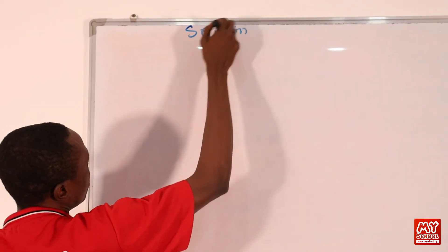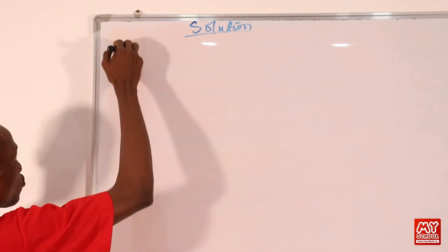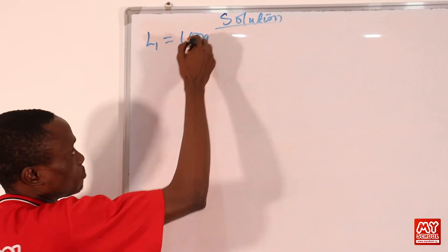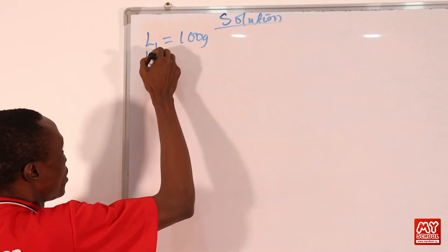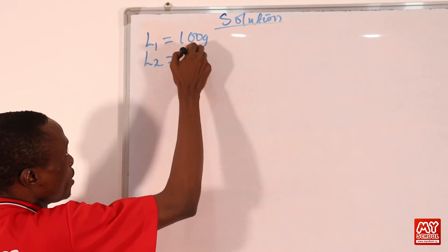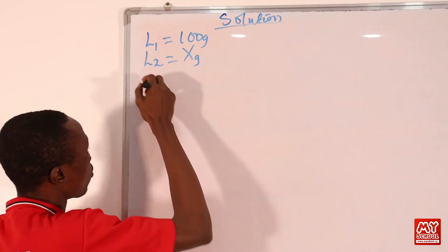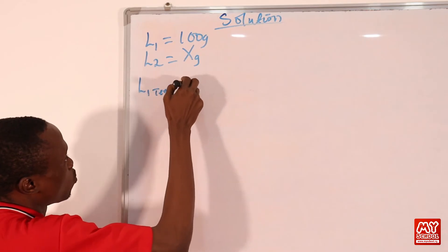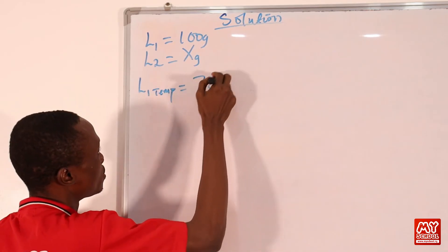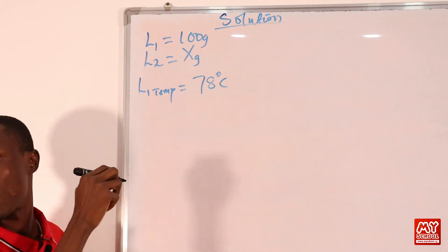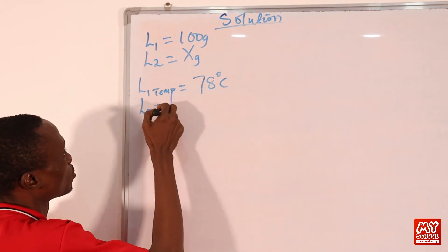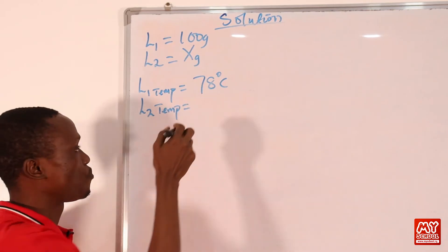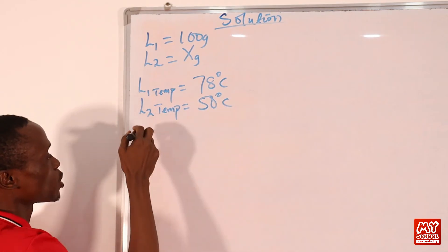Solution: write out the given parameters. The mass of L1 = 100 g, the mass of L2 = s grams. The temperature of L1 = 78°C, the temperature of L2 = 50°C.